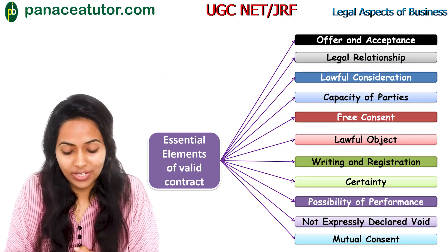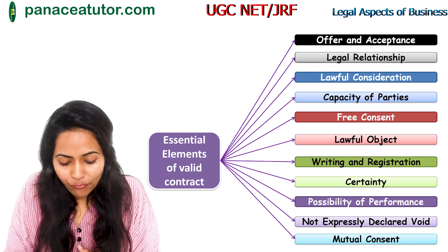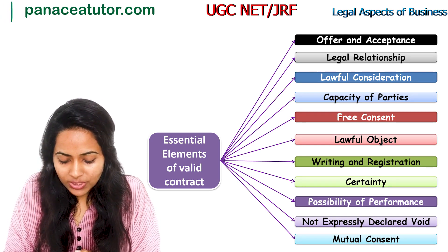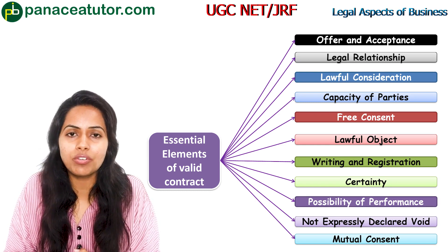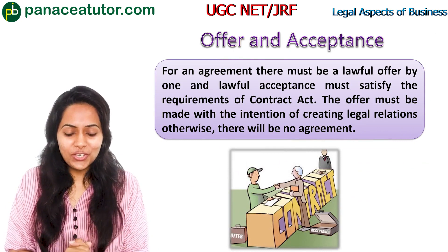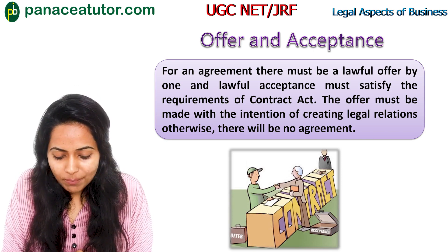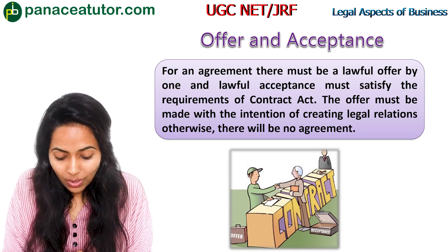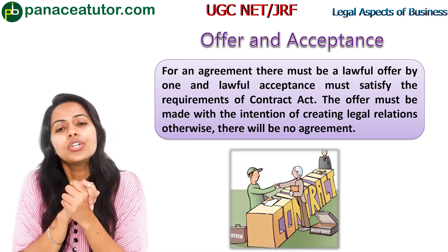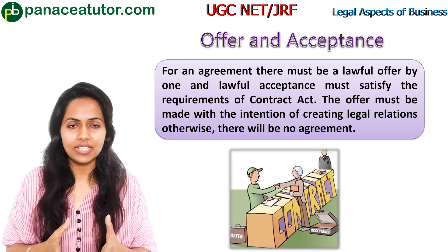Now we move to the main topic: Essential Elements of Valid Contract. The essential elements are: offer and acceptance, legal relationship, lawful consideration, capacities of parties, free consent, lawful objects, writing and registration, certainty, possibility of performance, not expressly declared void, and mutual consent. For the first element — offer and acceptance — there must be a lawful offer by one party and a lawful acceptance satisfying the requirements of the Contract Act, with the intention of creating legal relationship.